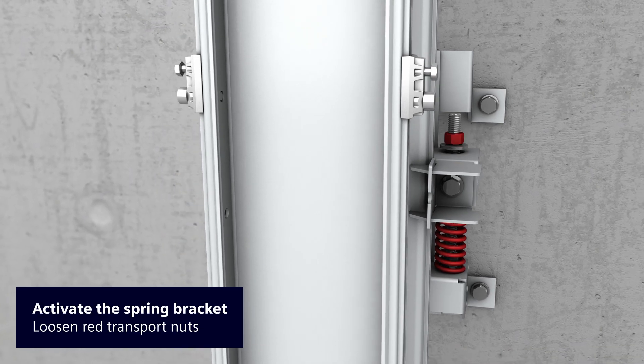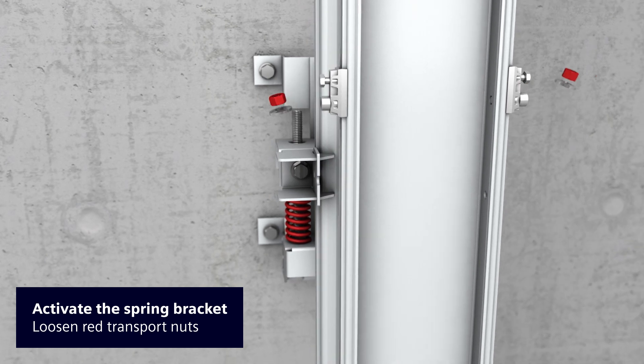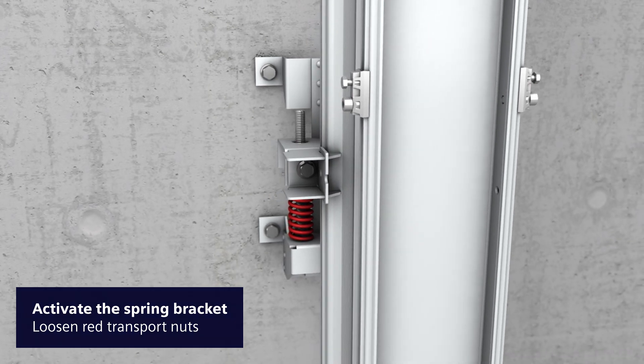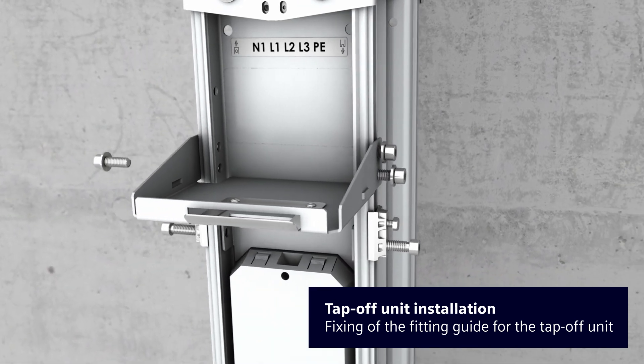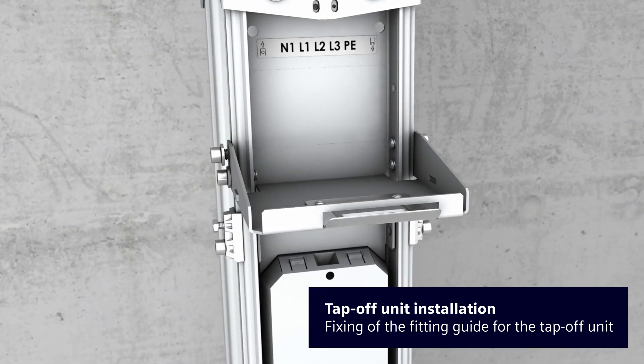The spring bracket becomes functional with the removal of the red nuts for transport protection. The fitting guide is then attached to the trunking unit before the tap-off unit is plugged on.